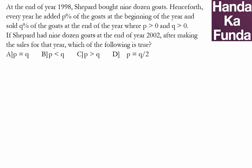Hello. In this particular question, we are given that at the end of the year 1998, a shepherd bought nine dozen goats. So he got 9 into 12 or 108 goats.